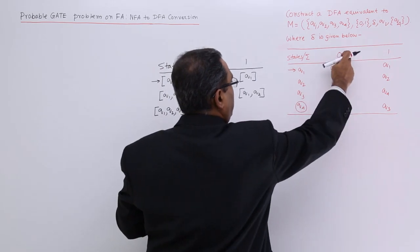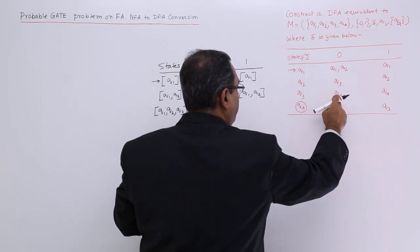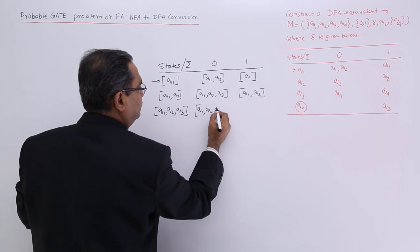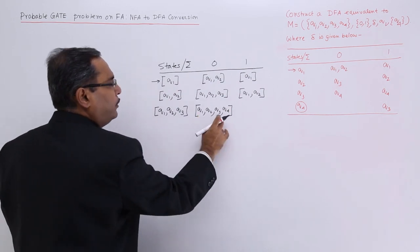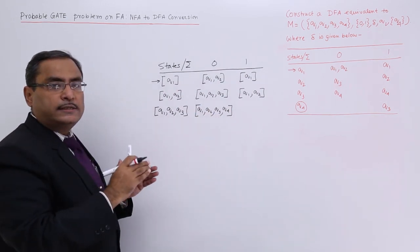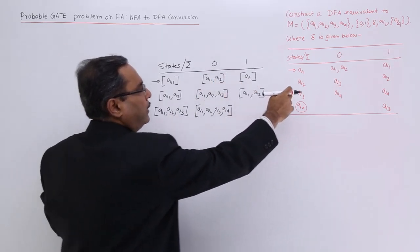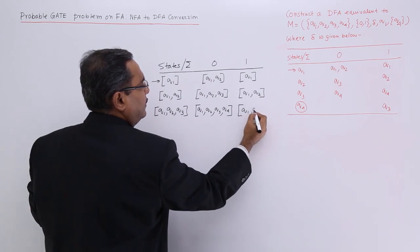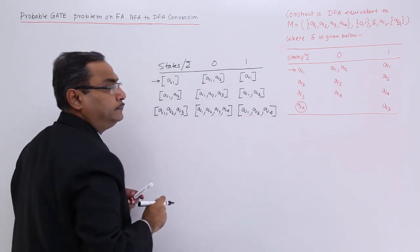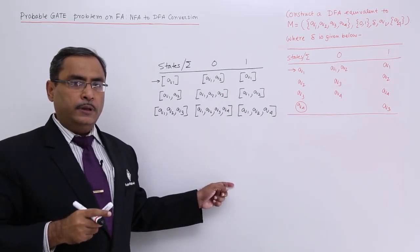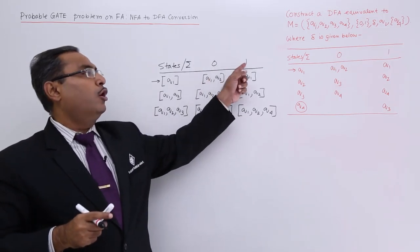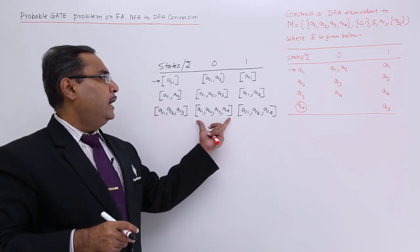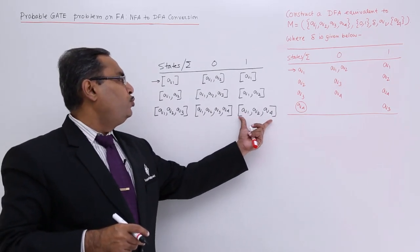For {q1, q2, q3} with input 0: I am having q1 q2 from q1, q3 from q2, and q4 from q3, so combining them I get {q1, q2, q3, q4}. For {q1, q2, q3} with input 1: q1 q2 q3 on 1 gives {q1, q2, q4}. Whatever new combinations we have under column 0 or 1 will be marked so I can determine their respective transitions. Here I am getting a new combination {q1, q2, q3, q4} and {q1, q2, q4} is also not yet there.